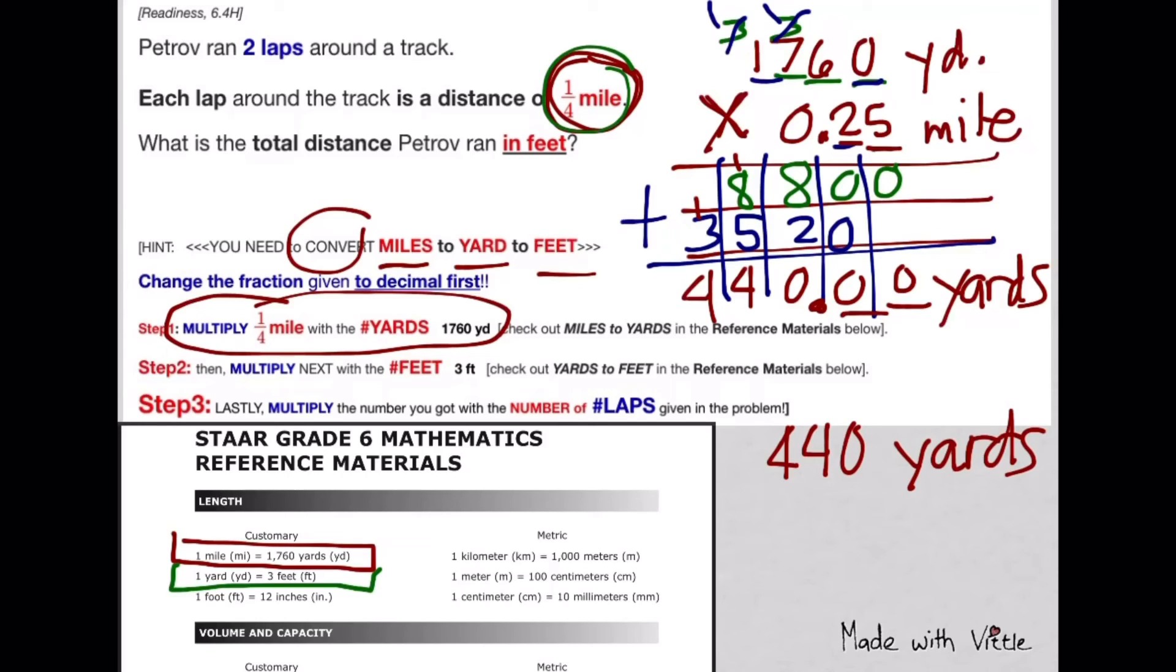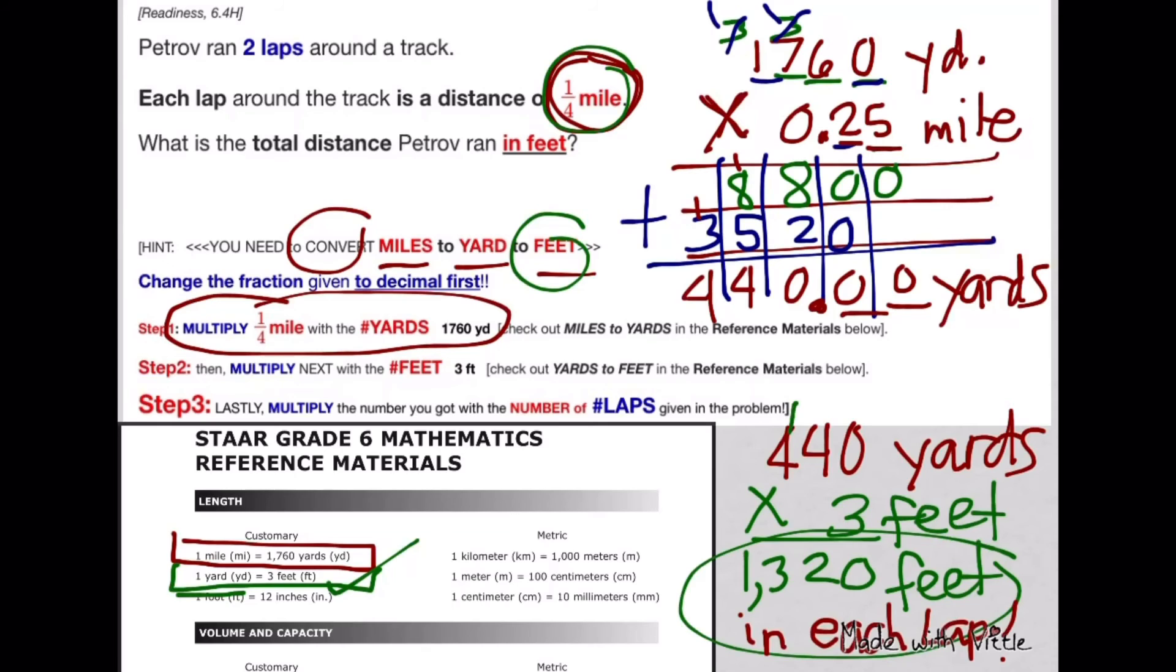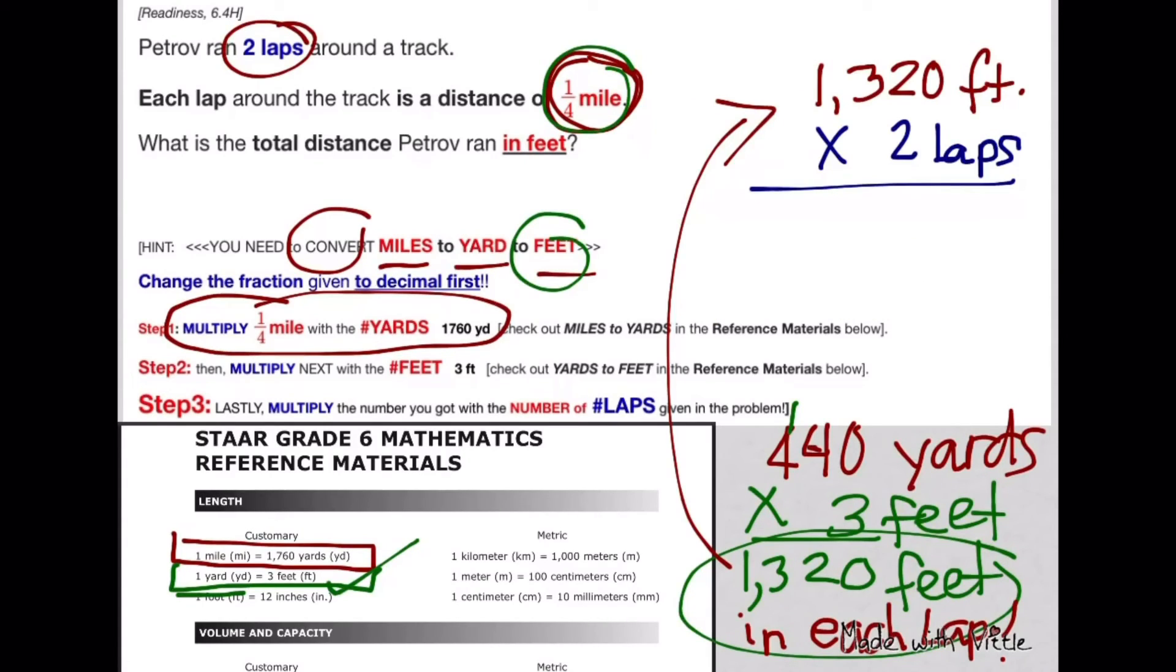We need to convert it to feet, and we know that in 1 yard there are 3 feet. But we have 440 yards, so multiply 440 yards by 3 feet. Now, this 1,320 feet is just for each lap, but we need it in 2 laps. The last thing to do here is multiply it by the number of laps they want, which is 2 laps.